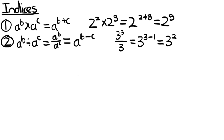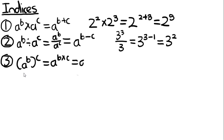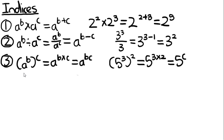The third law is that A to the power of B, to the power of C, is equal to A to the power of B times C. You multiply the exponents together when it's a power of a power. To put that into number form: 5 to the power of 3 to the power of 2 equals 5 to the power of 3 times 2, which equals 5 to the power of 6. You multiply them together because you're raising the whole thing to that outer power.